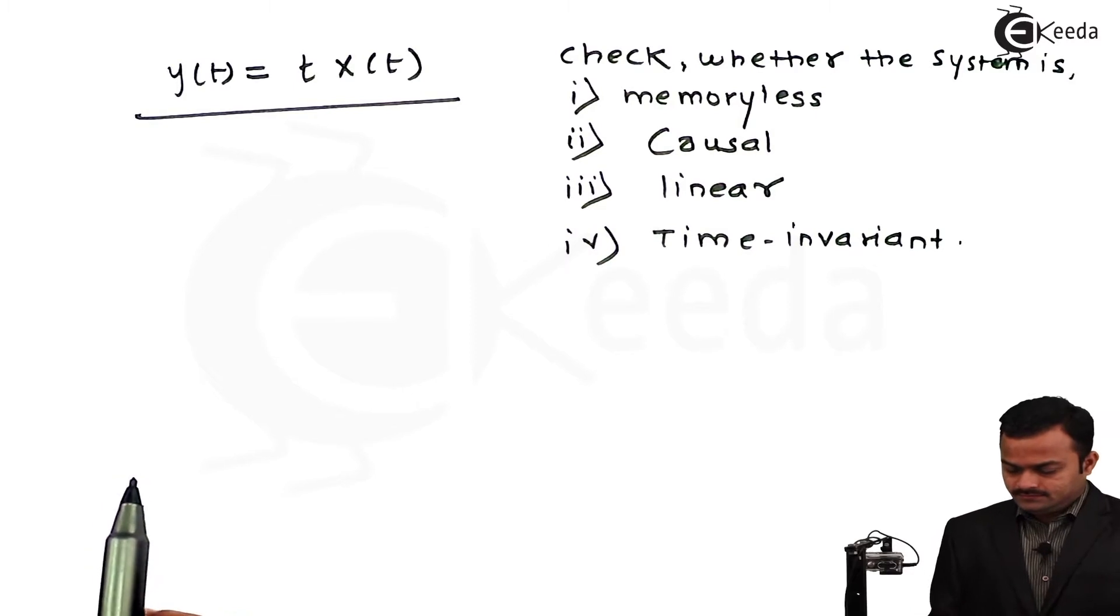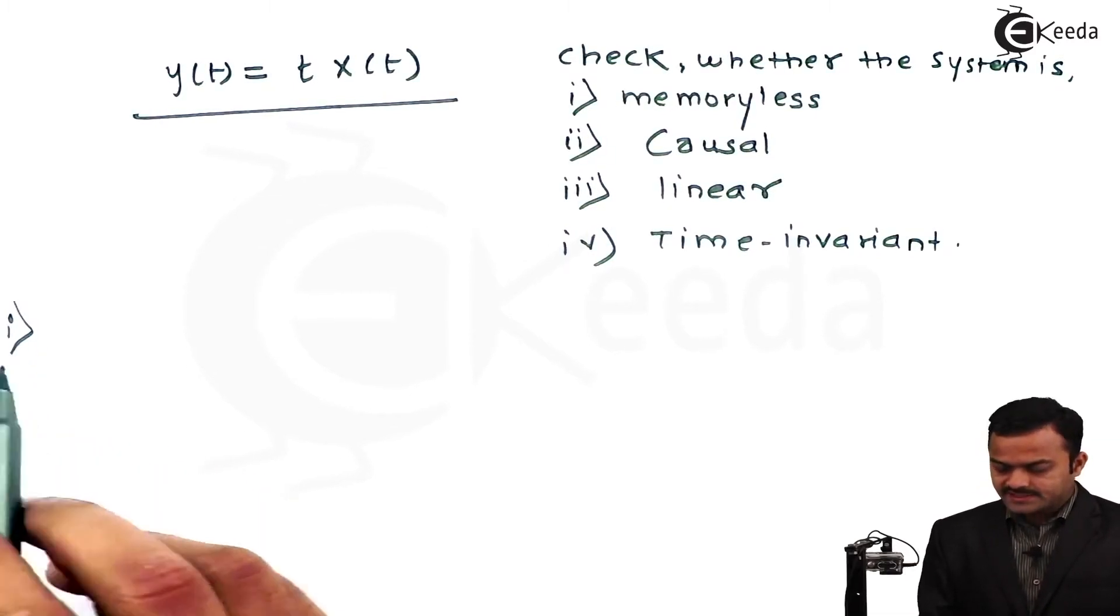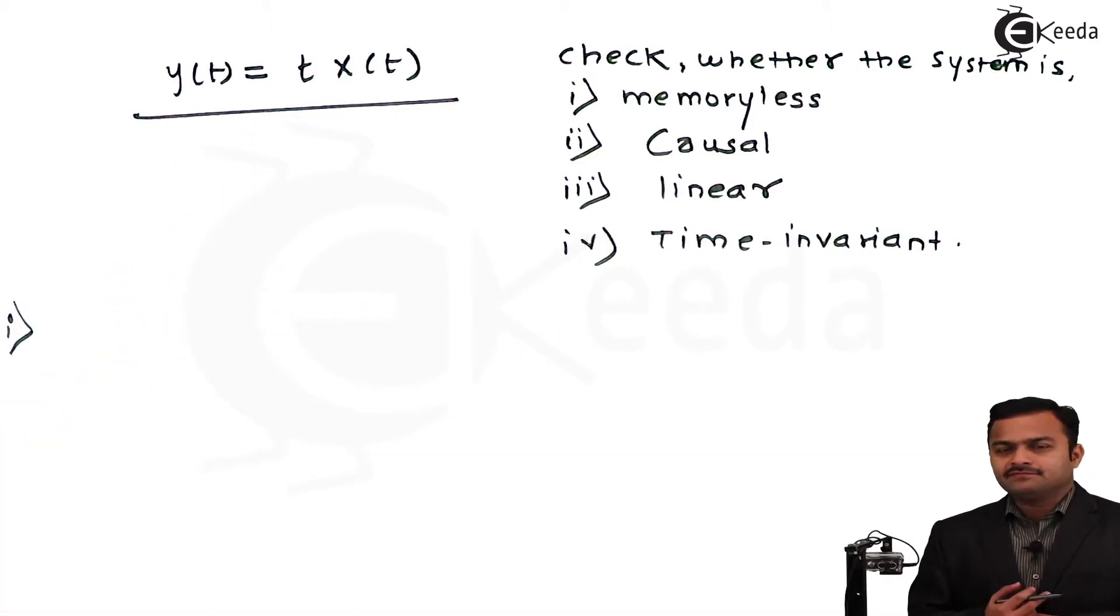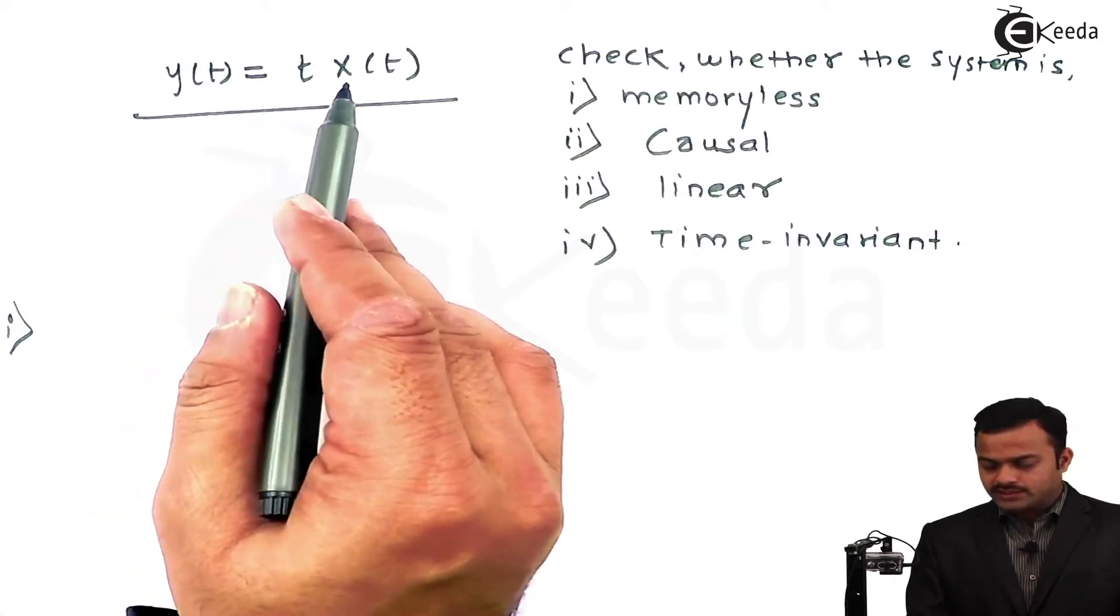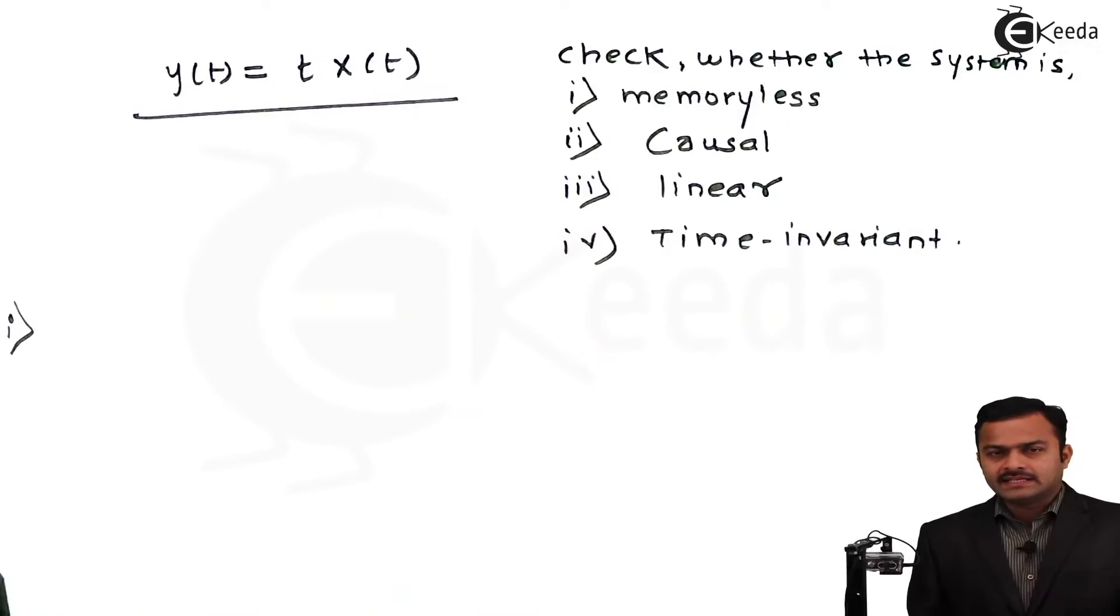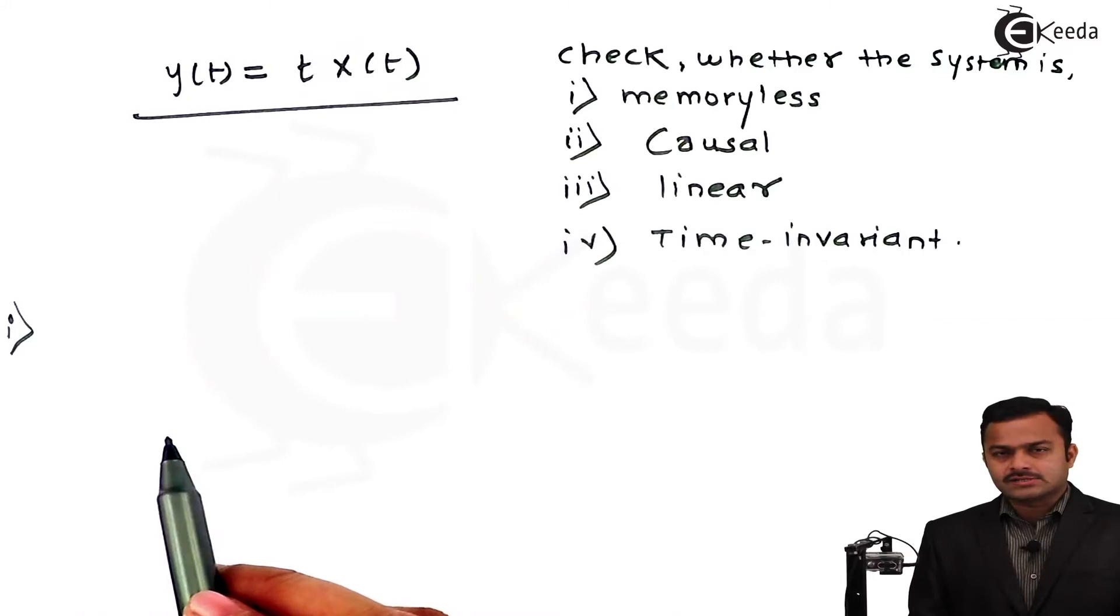Let's start. First point is discussing about the memory. We have seen that whenever there is a term in t which is either a shift in time, whether it is a delay or advance, then I can say the system requires memory. But in the expression y(t) = t·x(t), there is no shift given in t, especially x(t). So I can say the system does not require memory, hence it is memoryless.